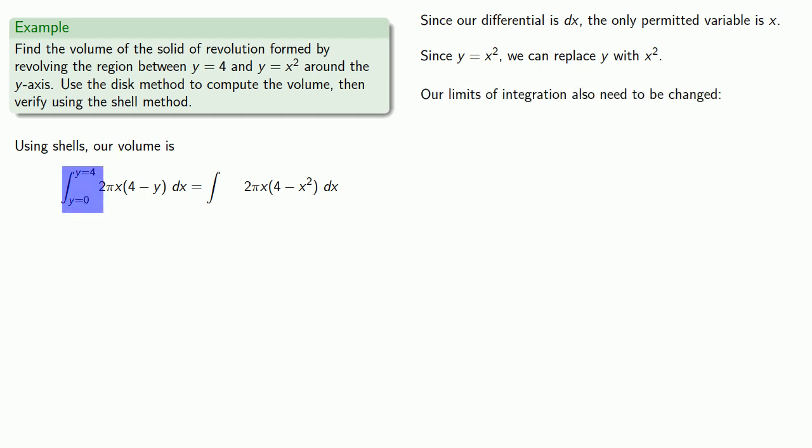Our limits of integration also need to be changed because they are currently in y. Our lower limit is y equals 0, and since y equals x squared, we can replace y with x squared and solve for x. And our upper limit, y equals 4, tells us x equals plus or minus 2.